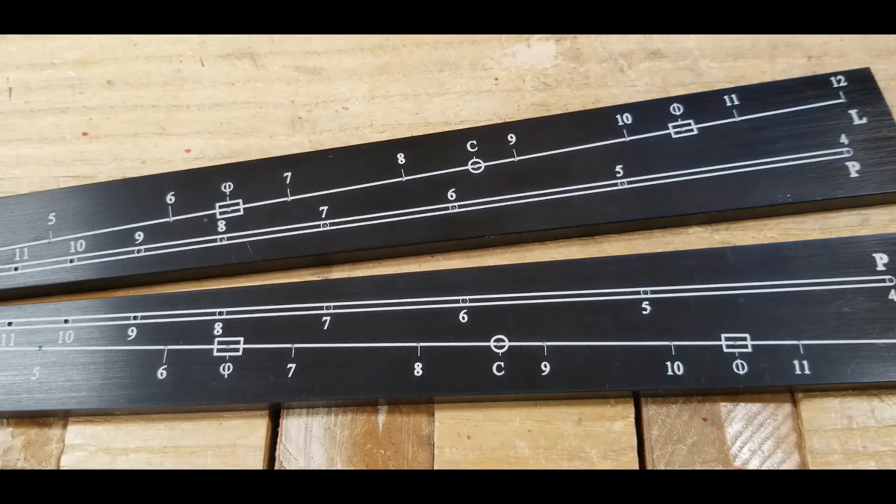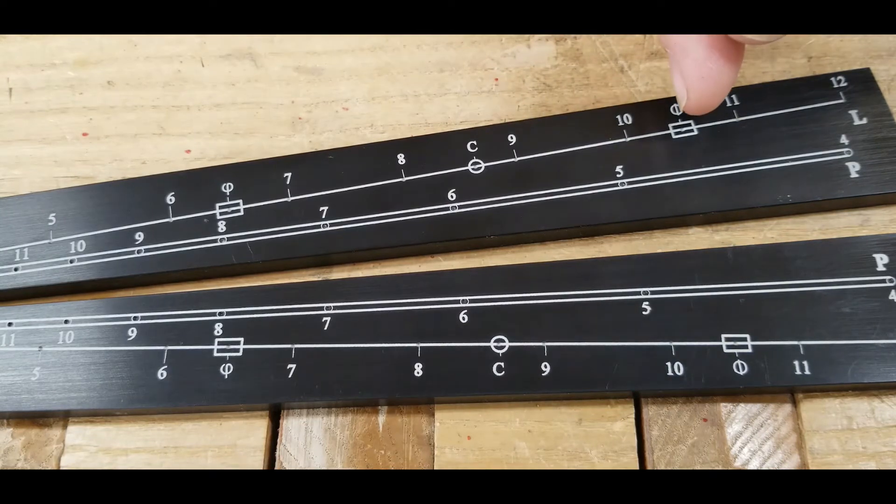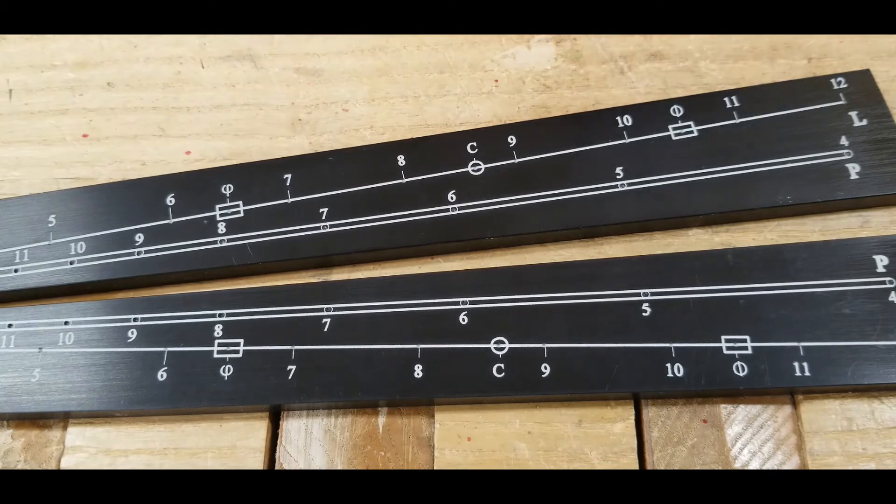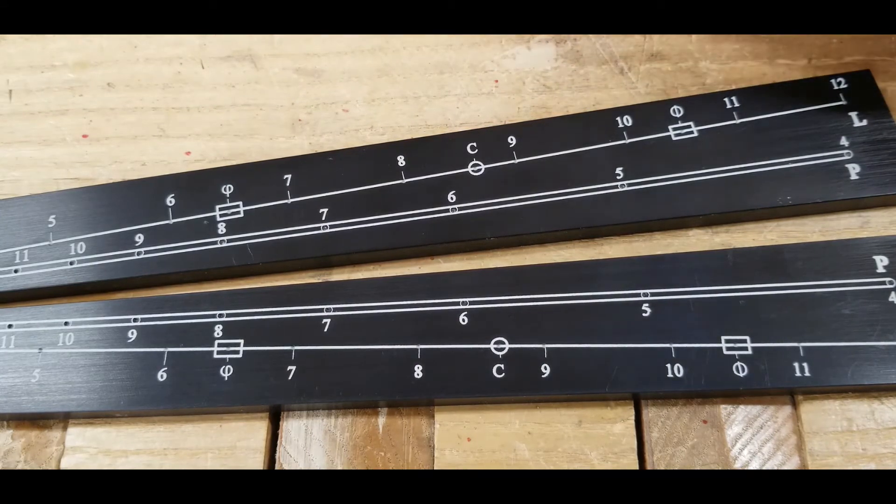We can also use the sector to find the golden ratio that's marked with these rectangles, the Greek letter pi, to create a golden rectangle, considered to be very pleasing proportions by some.